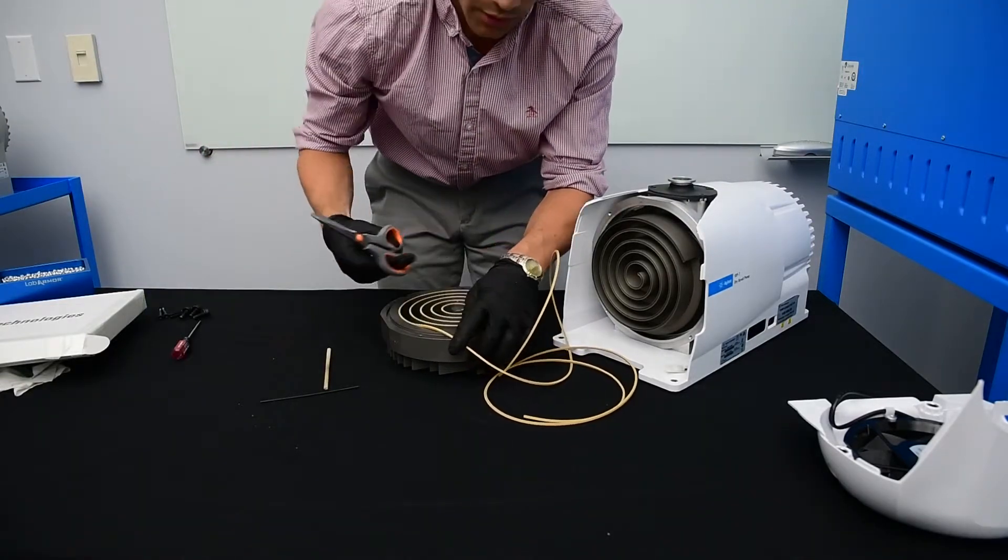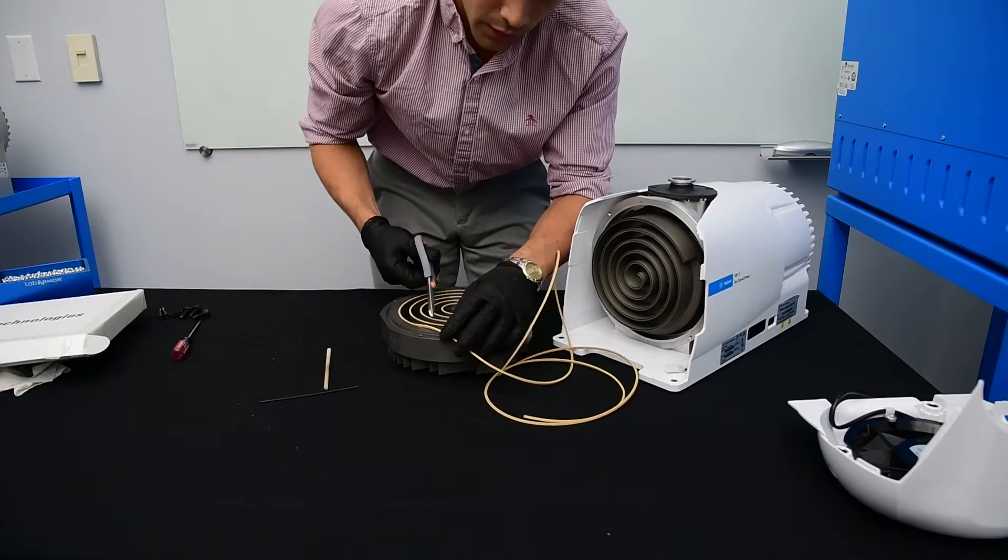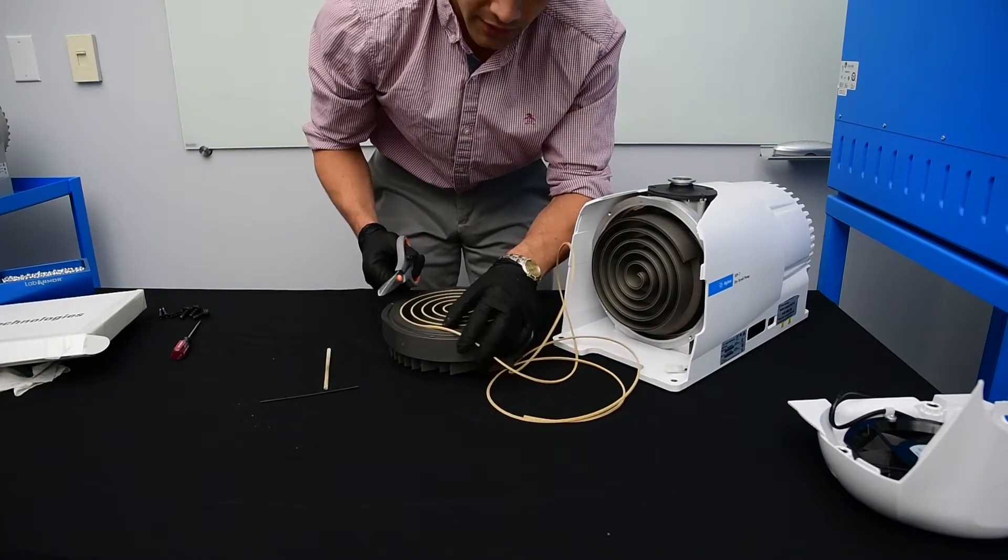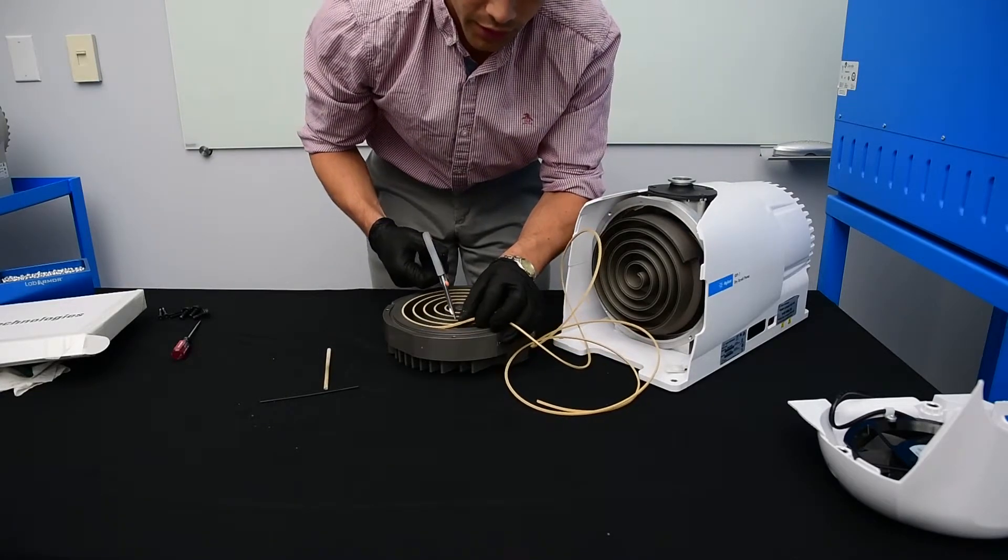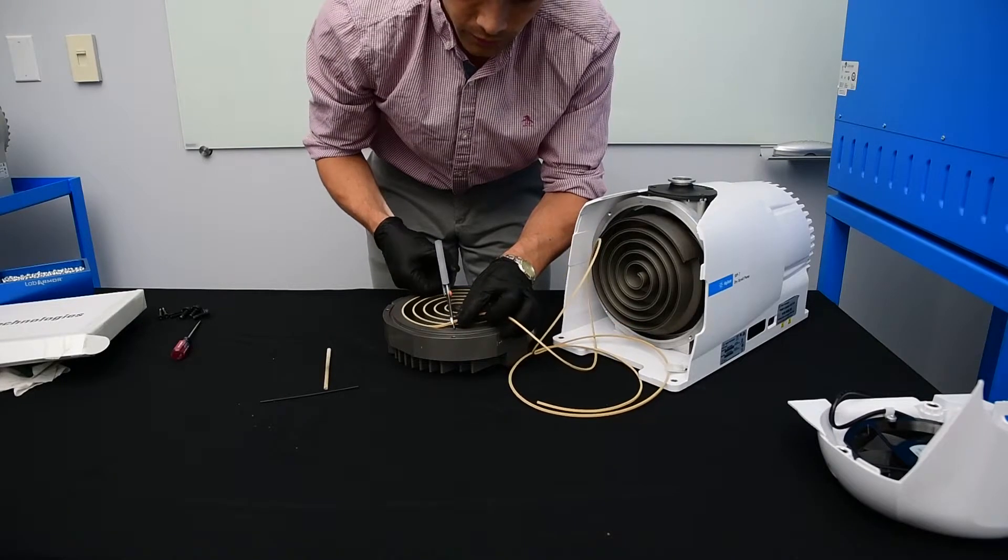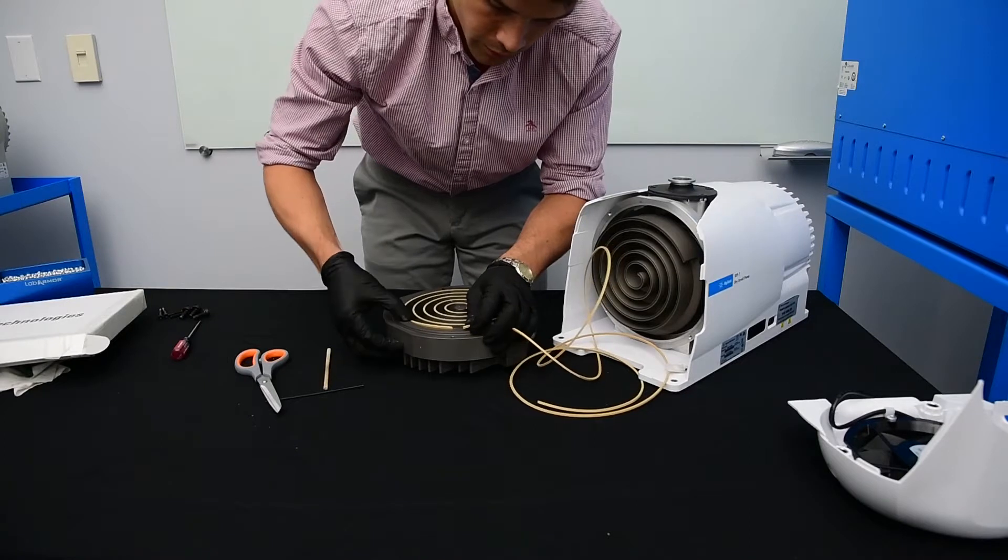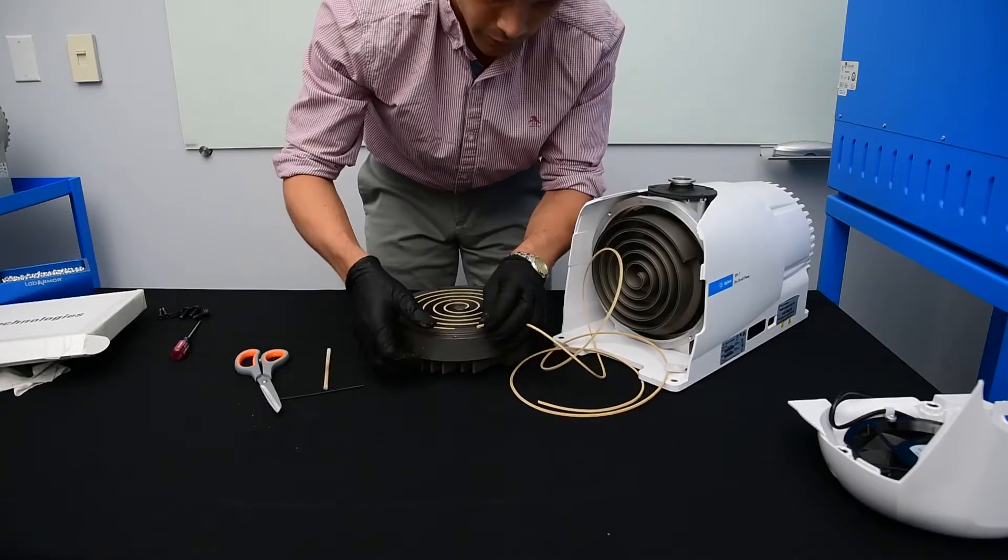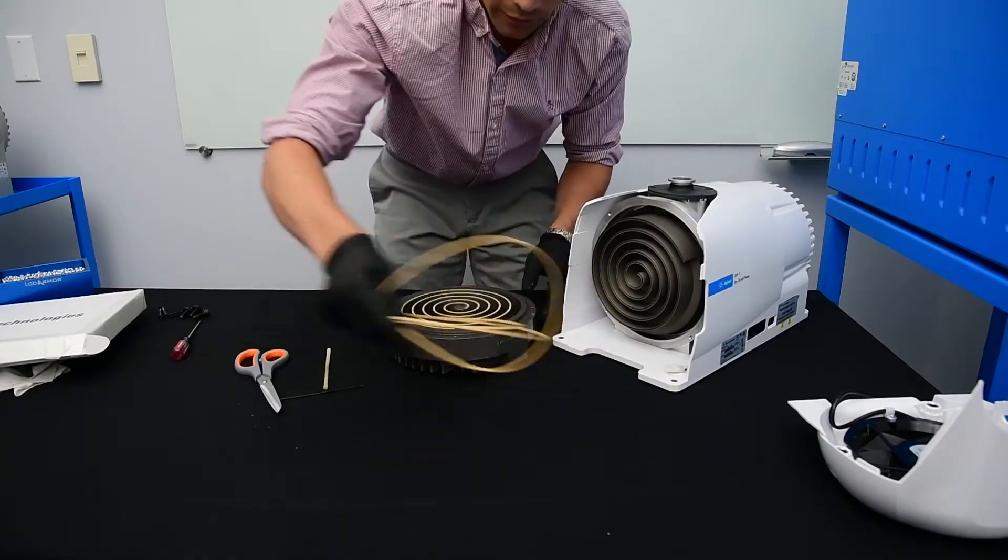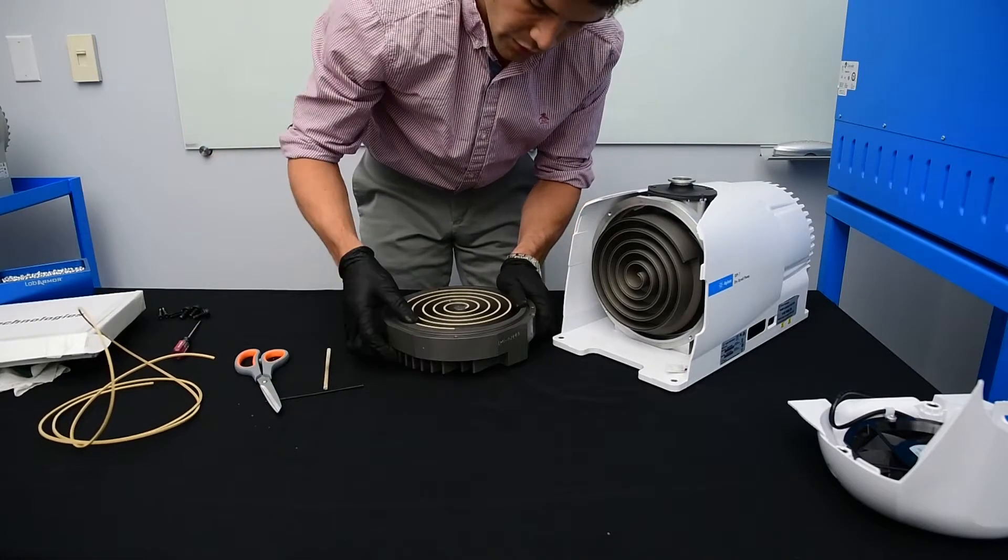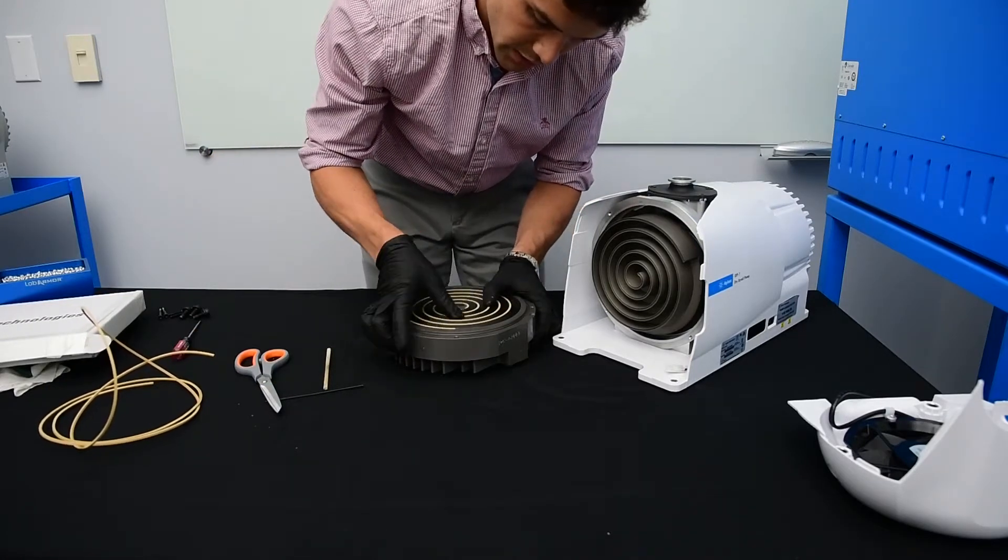Now using scissors or a pair of diagonal cutters, we're going to cut the tip seal shy of the end of the groove by a quarter to an eighth of an inch. Now go over and make sure the tip seal is firmly seated.